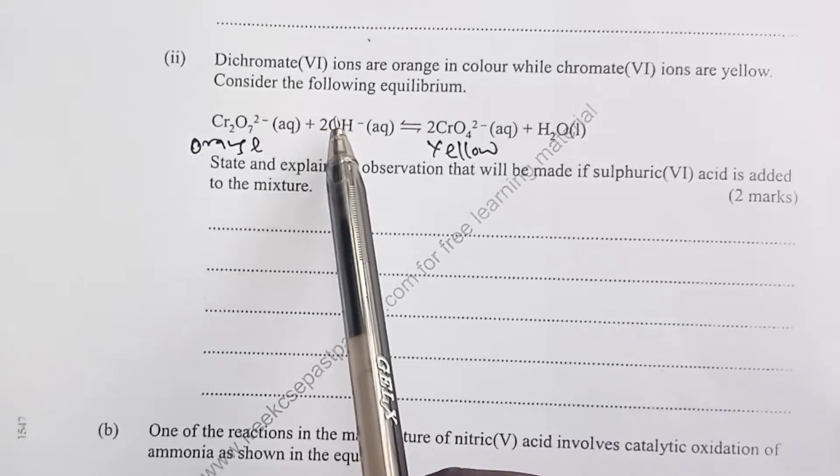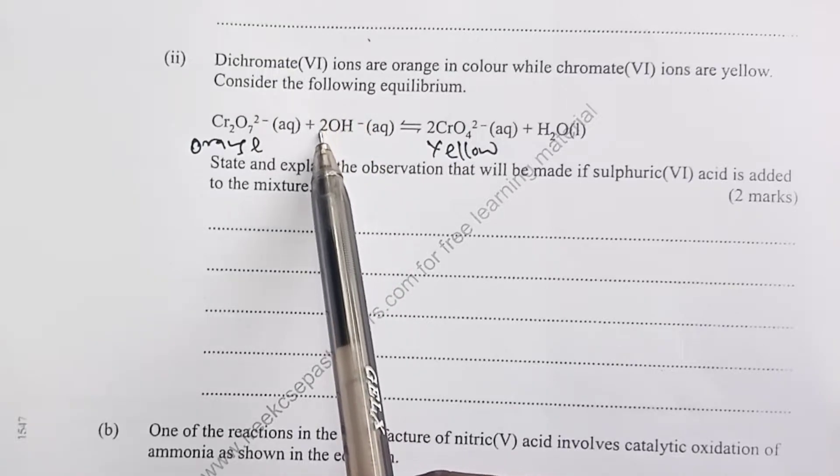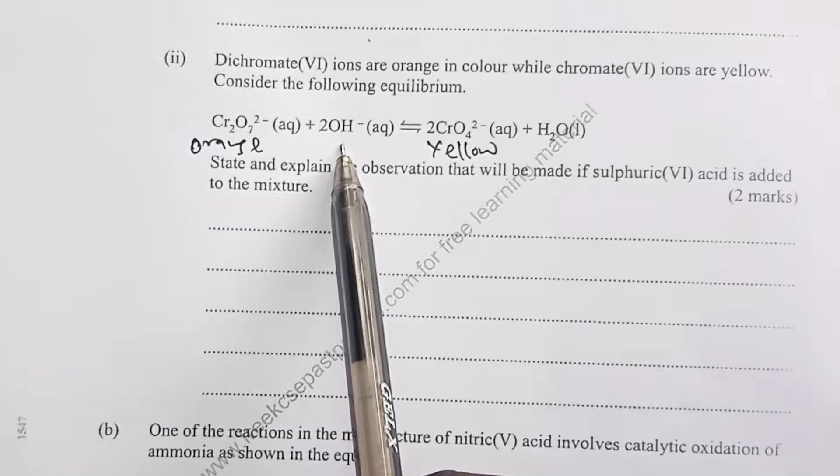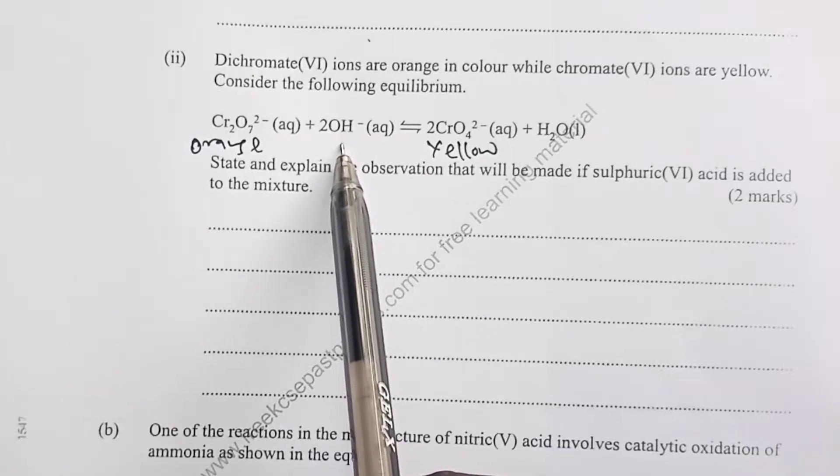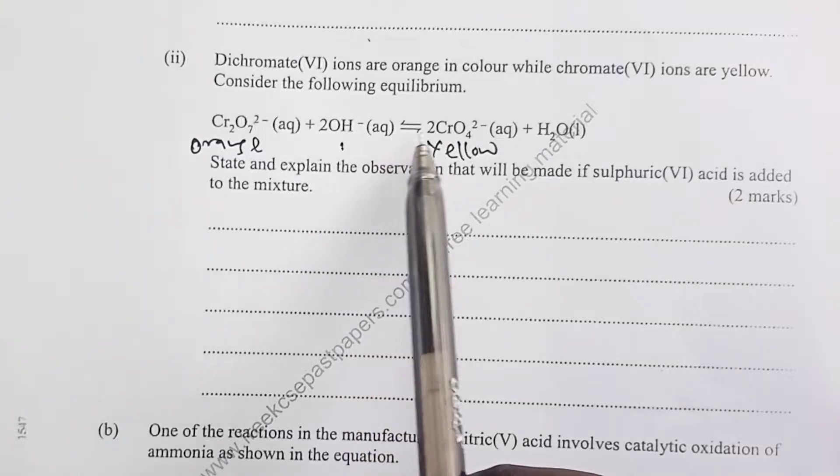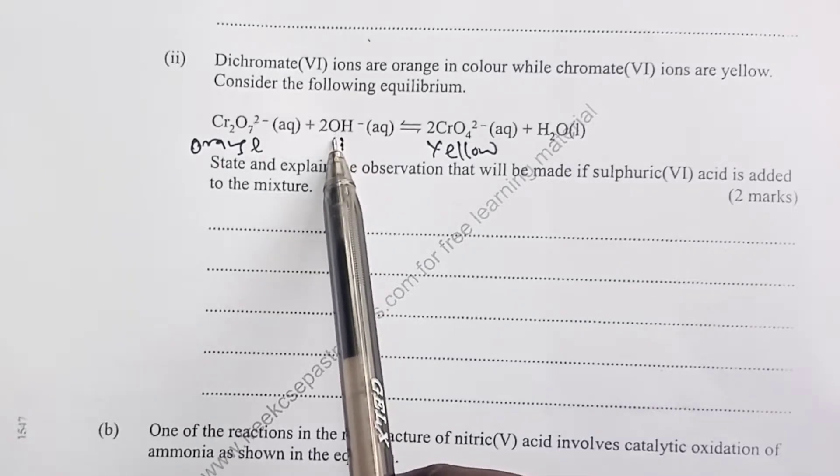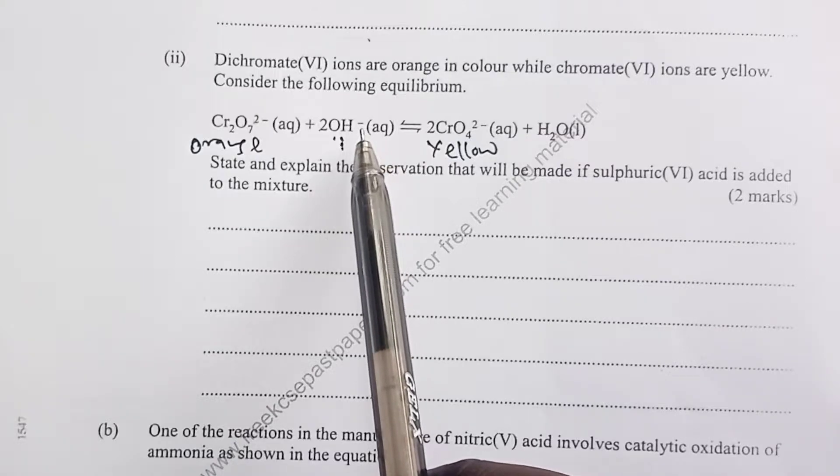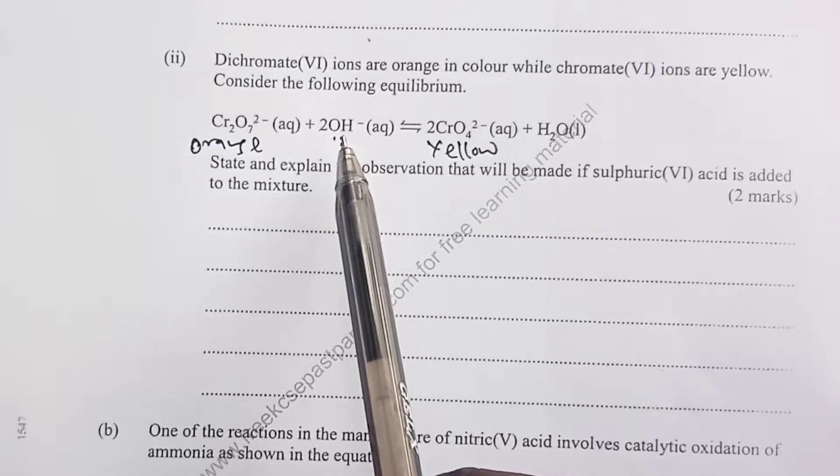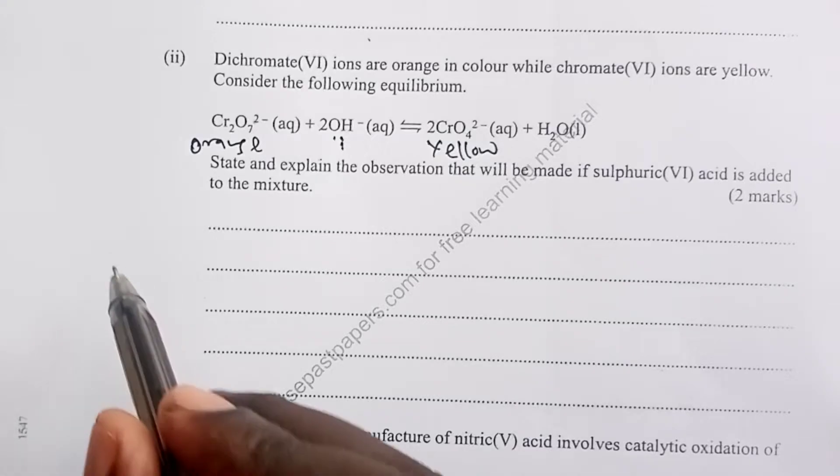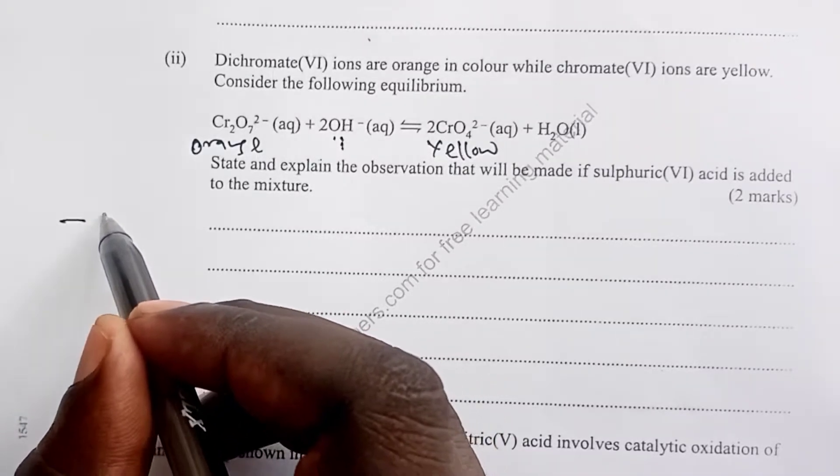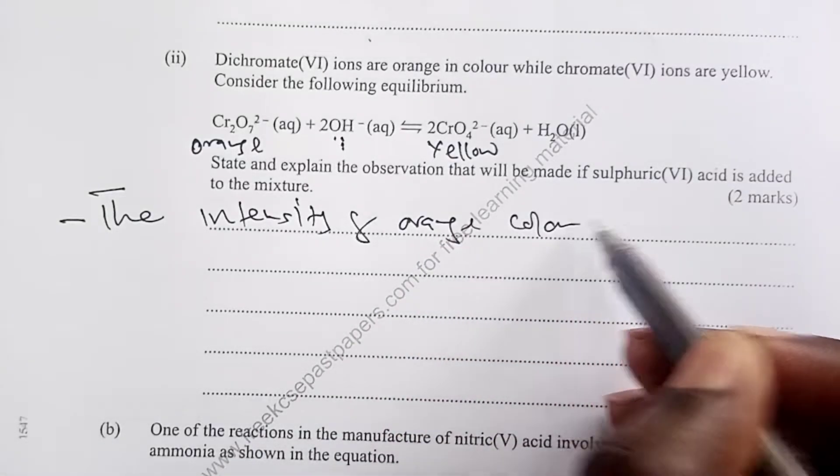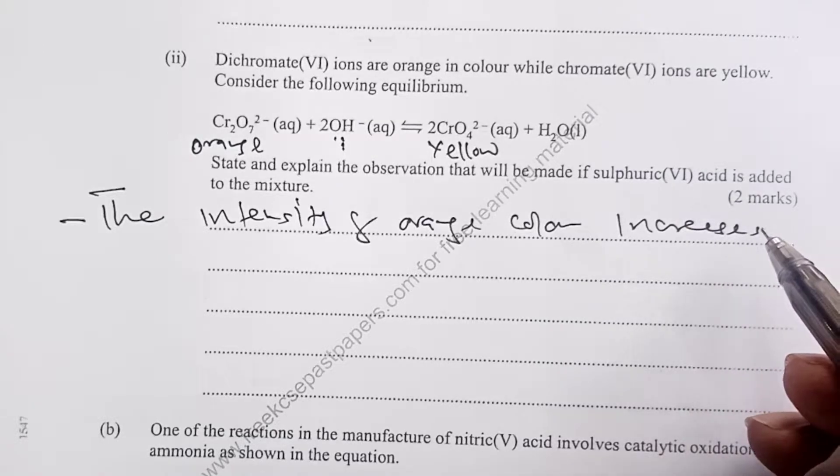Sulfuric(VI) acid will introduce hydrogen ions that will react with our hydroxyl ions here to form water. In short, we shall be decreasing the concentration of our hydroxyl ions. How will the equilibrium shift? The equilibrium will shift in a manner to increase the concentration of the same. So we say here that the backward reaction will be favored or the equilibrium will shift to the left. For that matter, the observation would be that the intensity of the orange color increases.